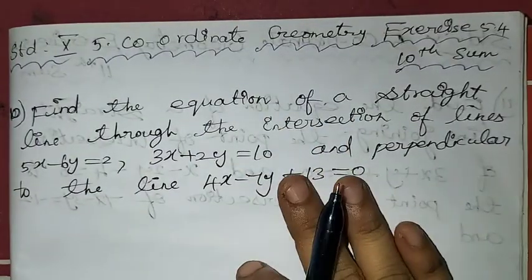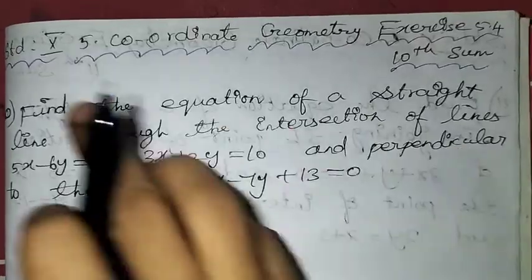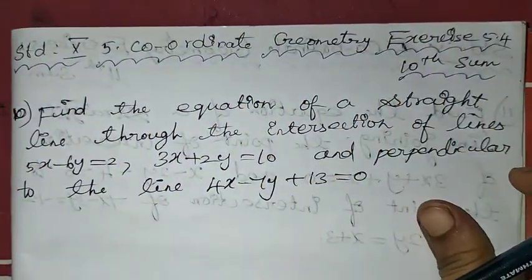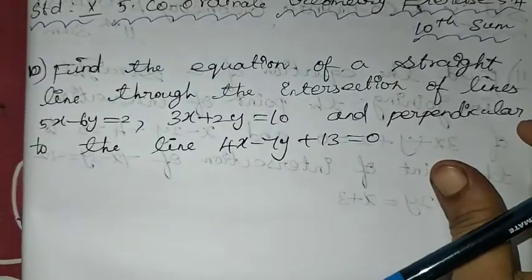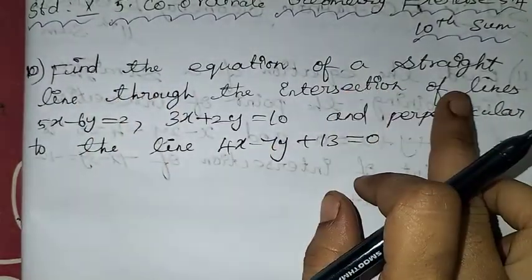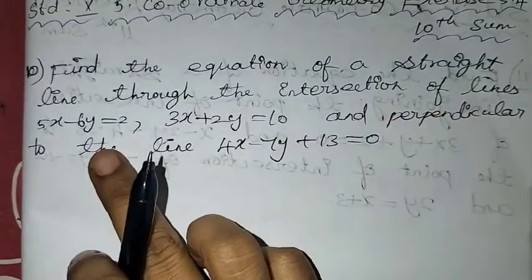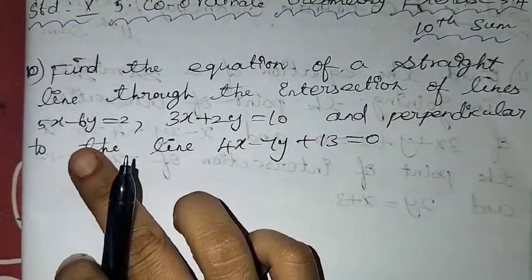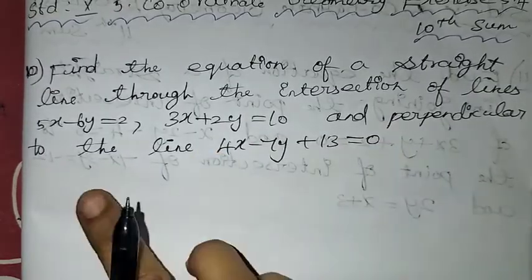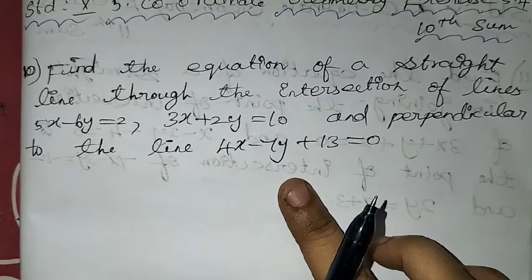Hello students, welcome to 1 Plus 1 channel. This is 10th standard chapter 5, exercise 5.4. In this problem, we need to find the equation of a straight line through the intersection of lines 5x minus 6y equal to 2, 3x plus 2y equal to 10, and perpendicular to the line 4x minus 7y plus 13 equal to 0.